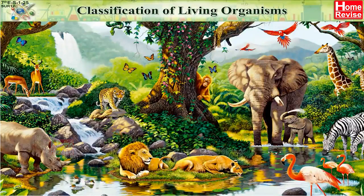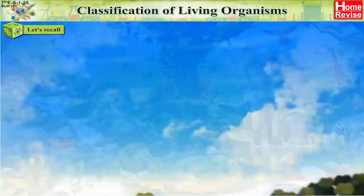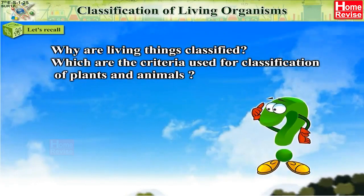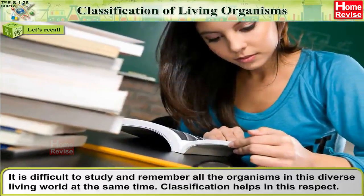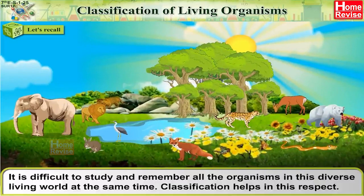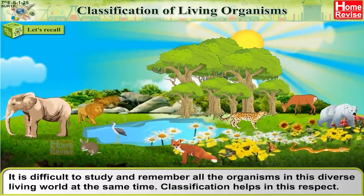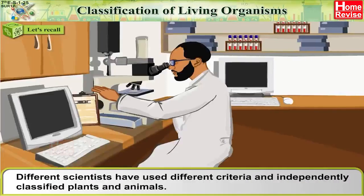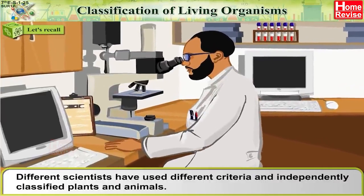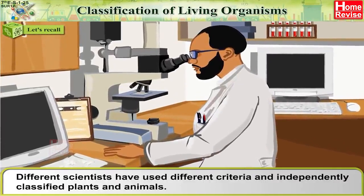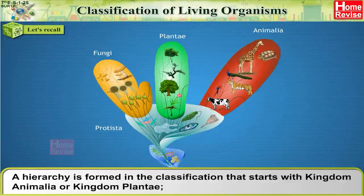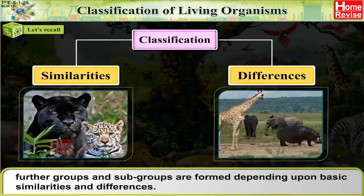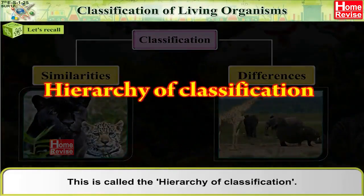Classification of Living Organisms: Why are living things classified? Which are the criteria used for classification of plants and animals? It is difficult to study and remember all the organisms in this diverse living world at the same time. Classification helps in this respect. Different scientists have used different criteria and independently classified plants and animals. A hierarchy is formed in classification that starts with Kingdom Animalia or Kingdom Plantae, and further groups and subgroups are formed depending upon basic similarities and differences. This is called the hierarchy of classification.